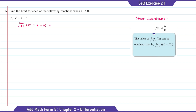For Question A, as x approaches 0, we're going to substitute x with 0. So 0 squared plus 0 minus 3, the answer is equal to negative 3. And that will be the limit value for Question A, as the answer is not equal to 0 over 0.